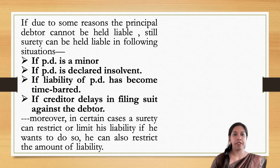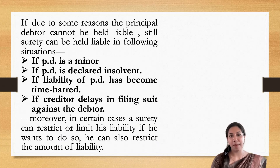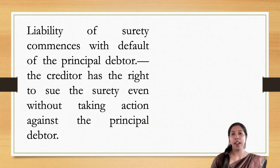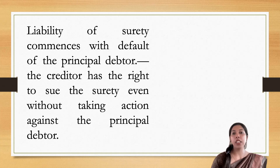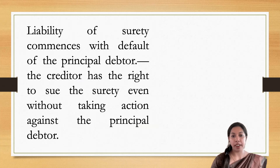In certain cases the surety can restrict or limit his liability. Discharge of surety from liability will be discussed in the next class — you can check it out on Legal Brain. The liability of the surety commences with the default of the principal debtor. The moment the principal debtor fails to make payment to the creditor, the surety's liability begins. The creditor has the right to sue the surety even without taking action against the principal debtor first.